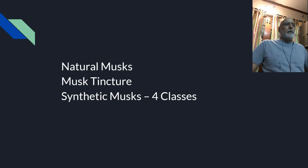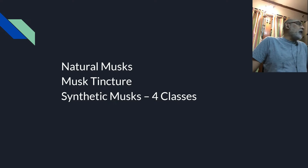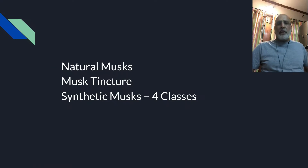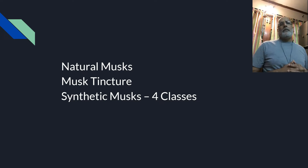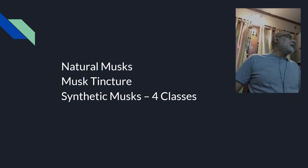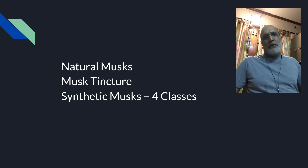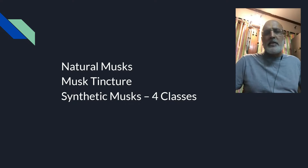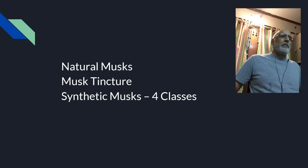Musk tincture is a natural raw material of animal origin, obtained from the musk gland of the male musk deer. It involves killing of the male musk deer, and due to this, in modern times, the use of musk tincture is prohibited in modern perfumery. Musk tincture is a very powerful perfumery natural raw material — it's a perfume by itself.